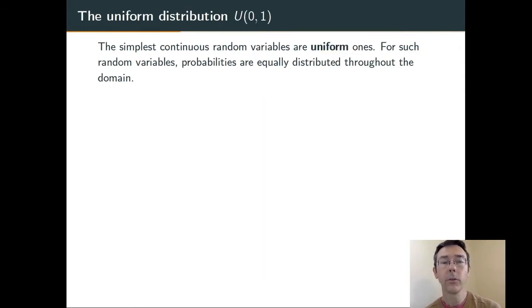The simplest sort of continuous random variable is a uniform one. For a random variable like that, probabilities are equally distributed throughout the domain of the random variable.